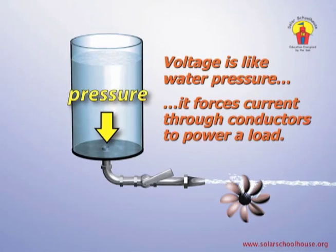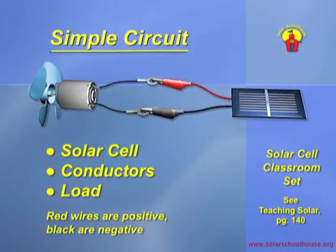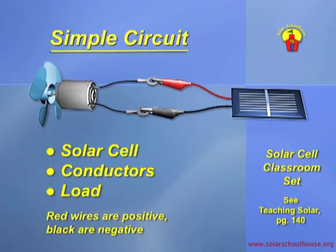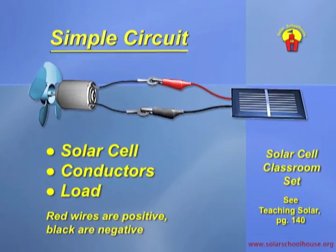The current of water is like the current of electrons, and the water wheel is like the light bulb that uses the energy of the current. We could use a solar cell as a voltage source instead of a battery. In this circuit, the solar cell is attached to a small motor that has a fan attached. The motor is the load, the wires conduct the current, and the solar cell provides the voltage that pushes the electrons through the circuit. Notice that the wires are color-coded to show their electrical charge: red wires are positive, black wires are negative.